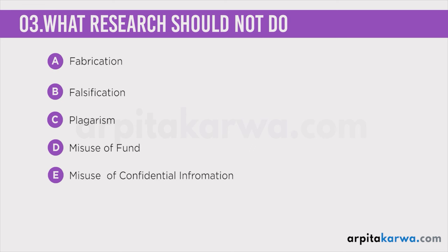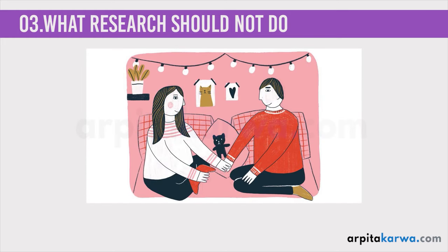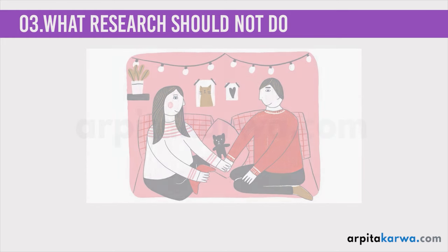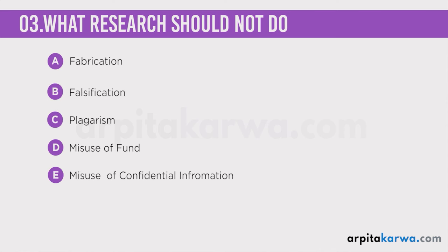Suppose you are doing research on knowing how many people lose their virginity before the age of 21. Just imagine a situation where you took data from 100 people — out of those 100, 70 people said that they have lost their virginity before the age of 21 and they have also stated when and how that happened.